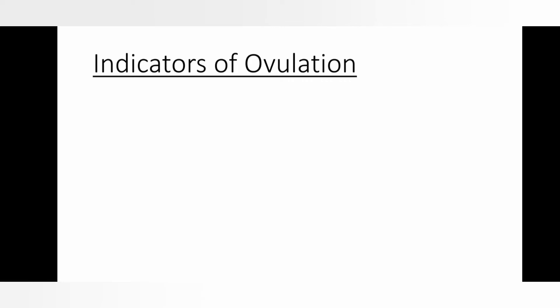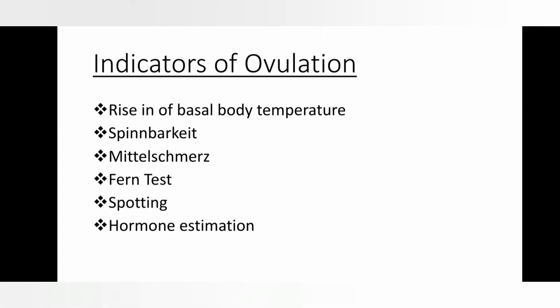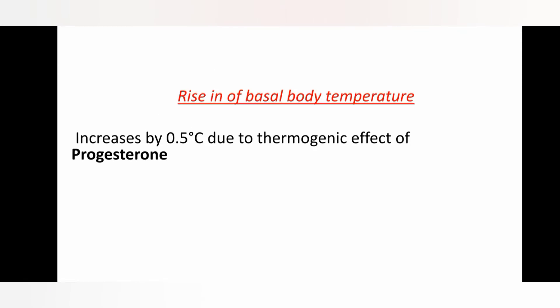Now let's start the indicators of ovulation. Here is the list of all the indicators: rise in basal body temperature, Spinnbarkeit, Mittelschmerz, fern test, spotting, and hormone estimation. I am going to teach all of these in detail in the upcoming slides. The first indicator is rise in basal body temperature.